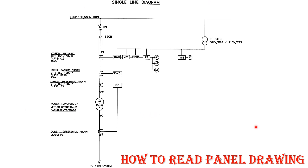This is the single line diagram of the control wiring — the first page of the panel drawing. It indicates there is a 66 kV bus, then an isolator and a breaker connected to it, and the arrangement for how PT and CT are arranged. Since this is the drawing for a transformer panel, there is a transformer as well.